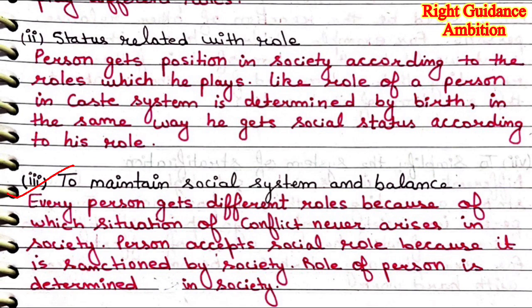Third point is: to maintain social system and balance. Every person gets different roles, because of which a situation of conflict never arises in society. When every person is role-playing in society, everyone understands their role and will not always conflict or interfere. The family knows what each role is — the role of husband, role of wife, role of children. The person accepts social roles because they are sanctioned by society; the husband knows to earn, the wife knows to take care of the household, because rules, regulations, and values are made in our society.